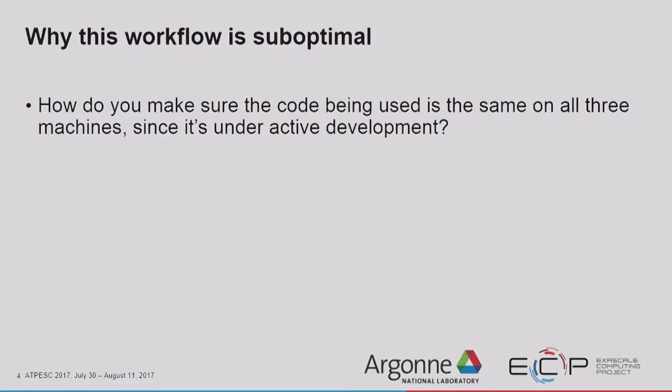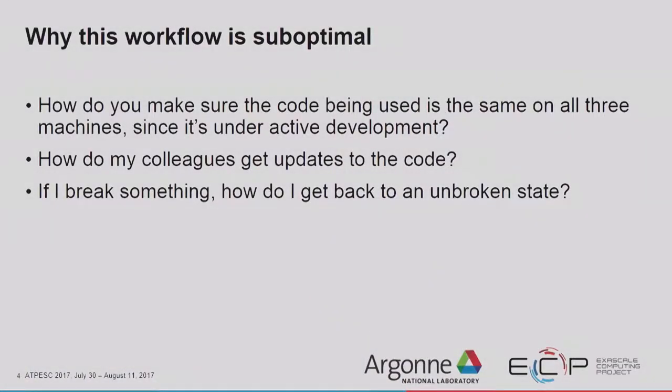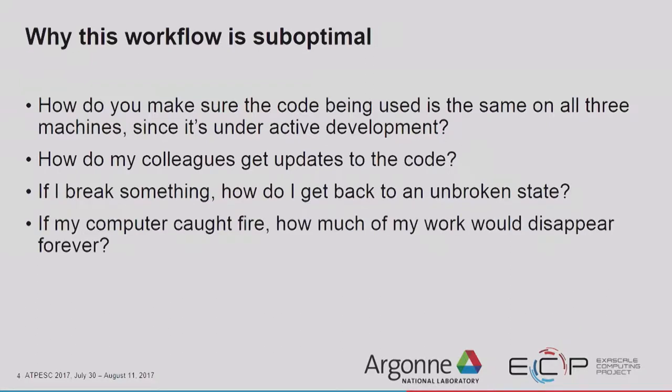So why this workflow is suboptimal — we already covered a lot of these. How do I make sure that my code is the same on all three machines? I would SCP files over when I remembered, but sometimes I wouldn't, so the code on those three machines was probably not exactly the same. How do my colleagues get updates? I was just emailing tarballs around — dozens of them. If I were to accidentally break something or delete everything, how would I get back to an unbroken state? It was really, really hard. And if my computer were to spontaneously catch fire, how much of my work would disappear forever?